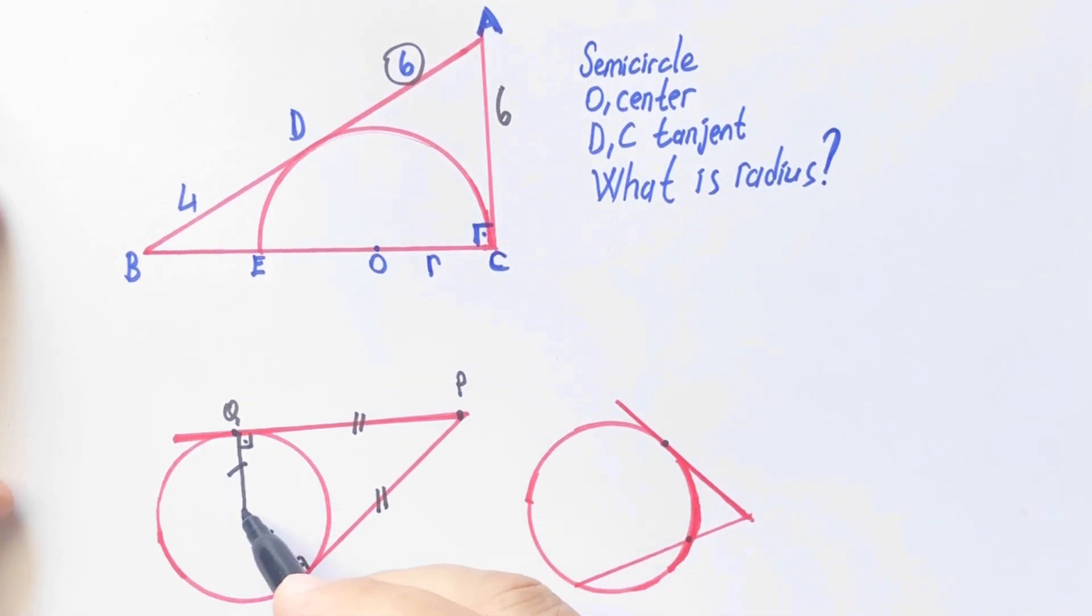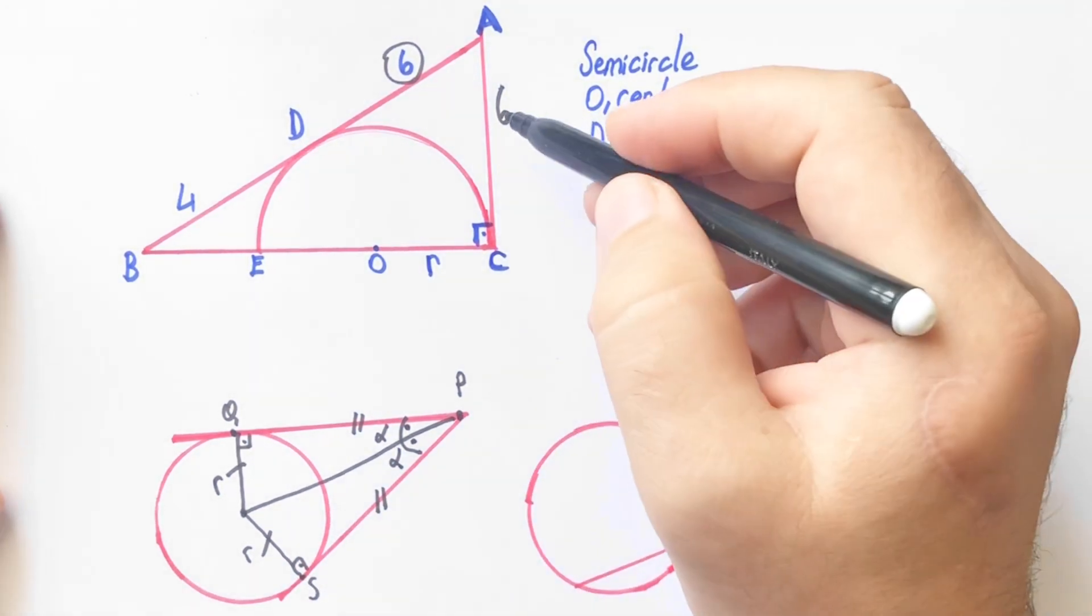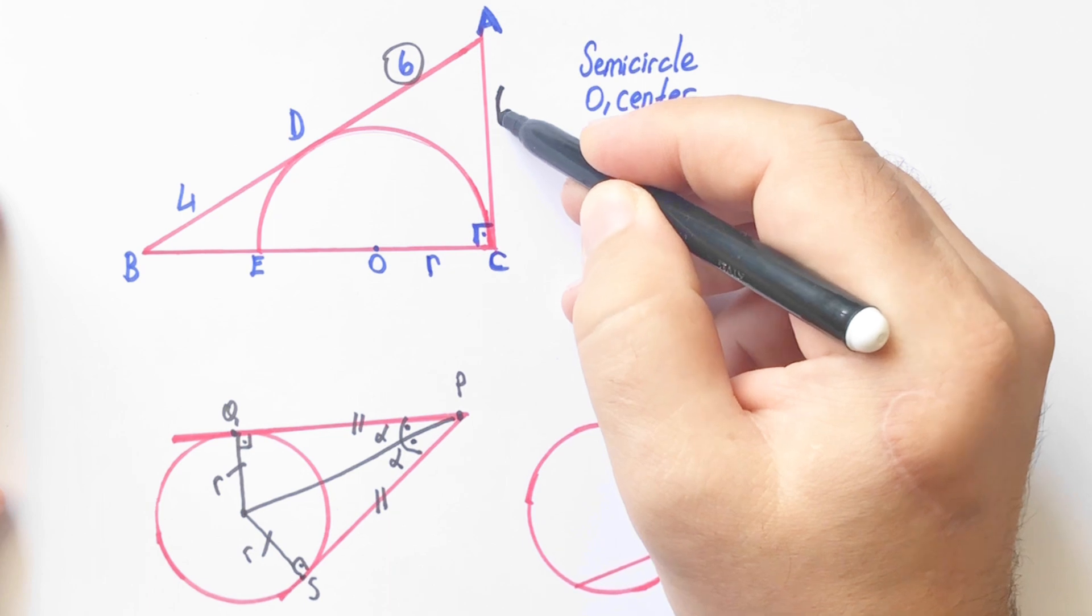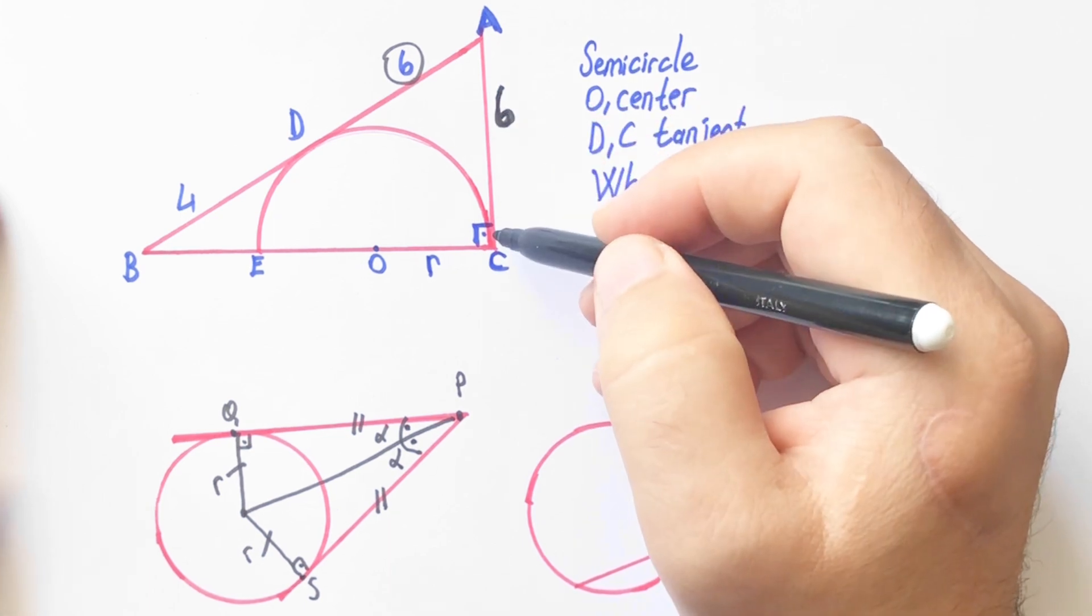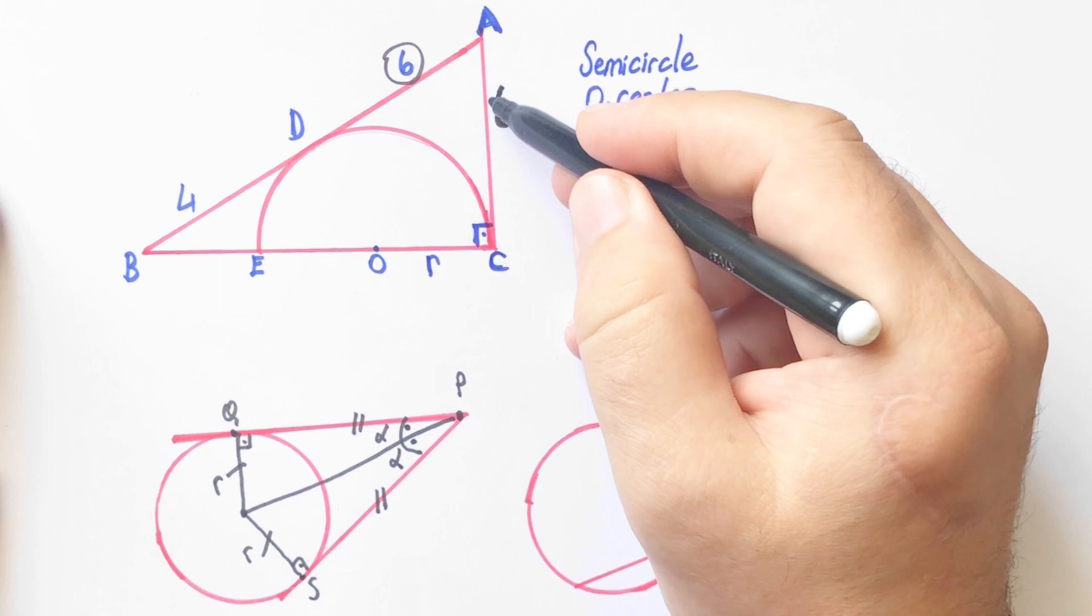These are radius, so if we connect here, these two angles are equal because of the sector line. So alpha alpha, QP and SP are equal, so here will be 6 units in this triangle.